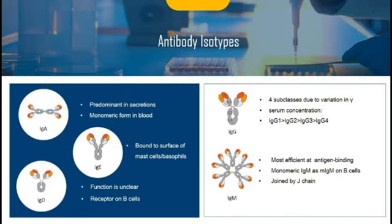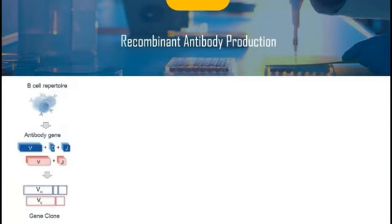Until now, I believe that you have almost understood the definition of antibody, its basic structure and function. Let me show you what recombinant antibody is. A recombinant antibody is an antibody fragment generated by using recombinant antibody coding genes as a source and display technology, delivering high reproducibility, specificity, and scalability.